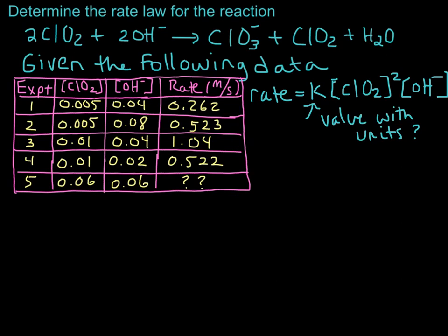Any of those experiments has a complete data set, we can use any one of those and plug in the values, so we can plug in the concentrations for the reactants and we can plug in this rate for any one of these experiments, and then we can just solve for the rate constant K.